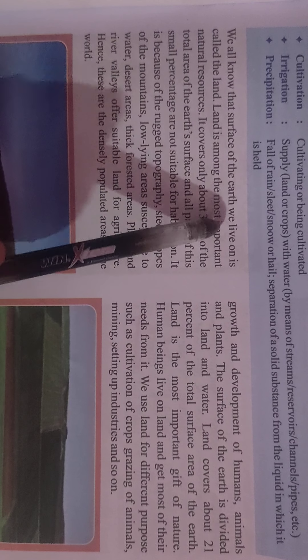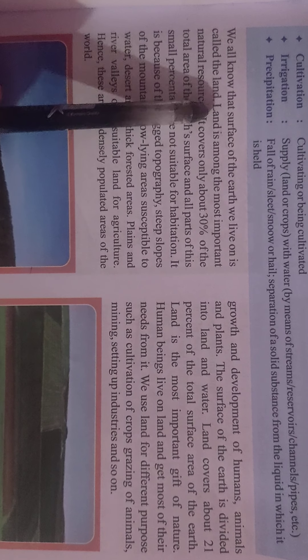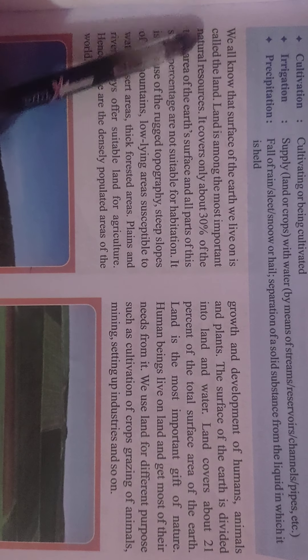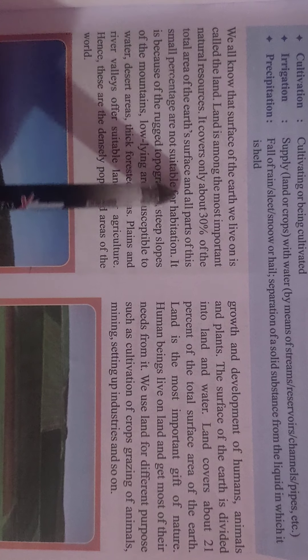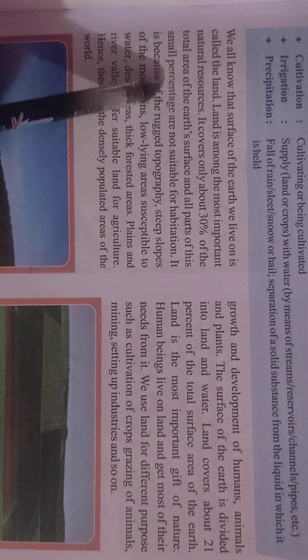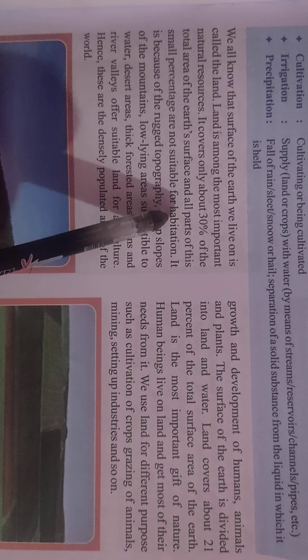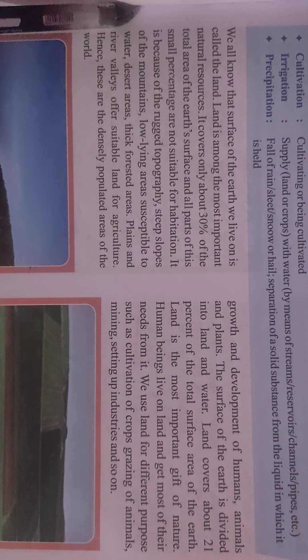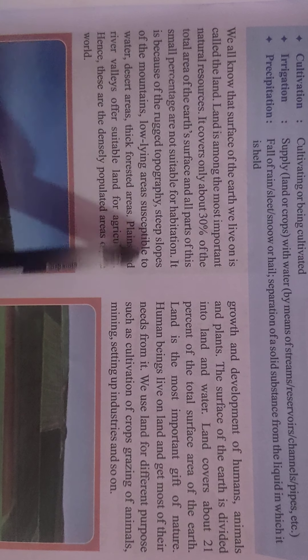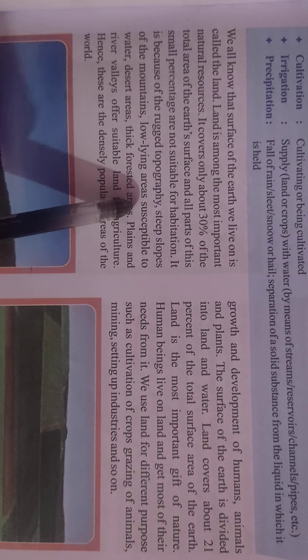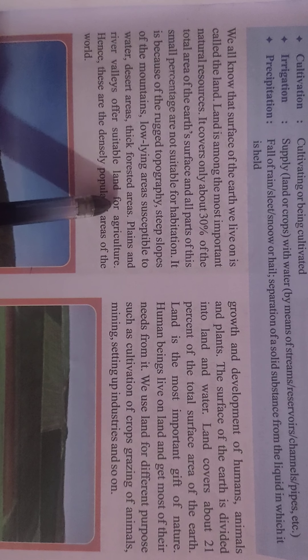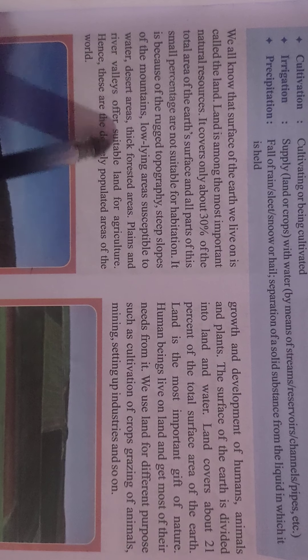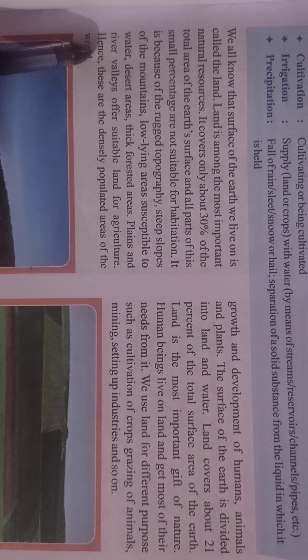We all know that the surface of the earth we live on is called the land. Land is among the most important natural resources. It covers only about 30% of the total area of the earth's surface, and all parts of this small percentage are not suitable for habitation. It is because of rough topography, steep slopes of the mountains, low lying areas susceptible to water, desert areas, and thick forested areas. Plains and river valleys offer suitable land for agriculture, hence these are densely populated areas of the world.